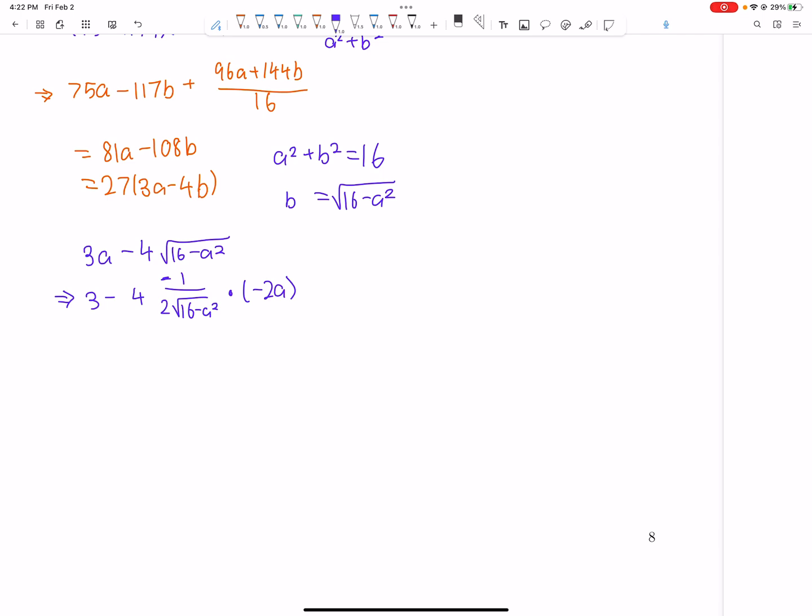So now we just can cancel out these negatives. We can make that a plus. So when is this going to be equal to 0? Because that's when the thing is maximized. We just solve it. We have 3 equal to 8a over 2 times the square root of 16 minus a squared, which is 4a over the square root of 16 minus a squared.